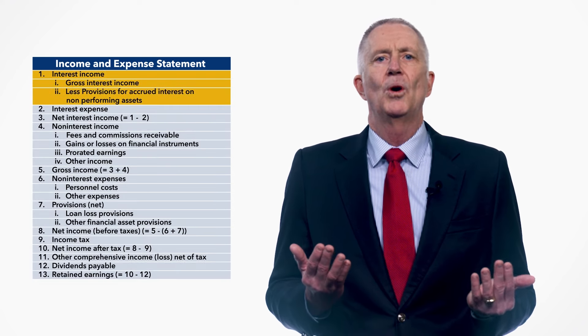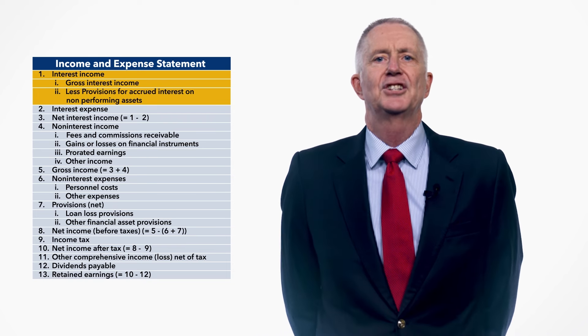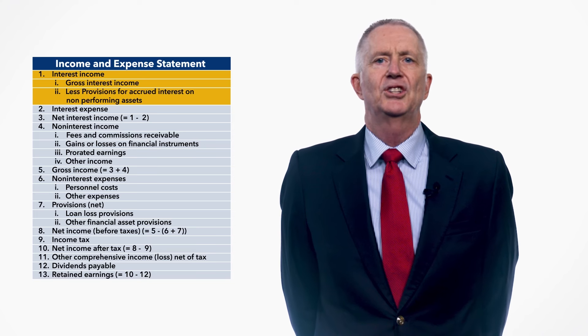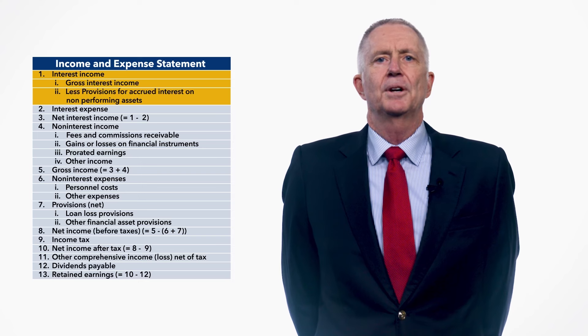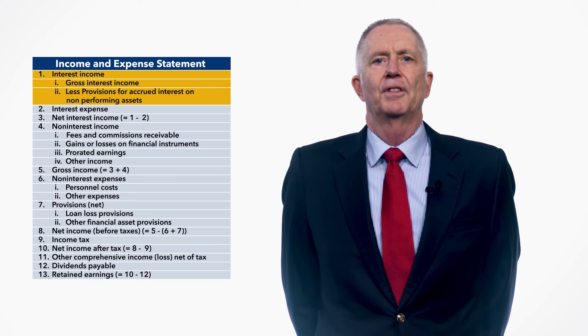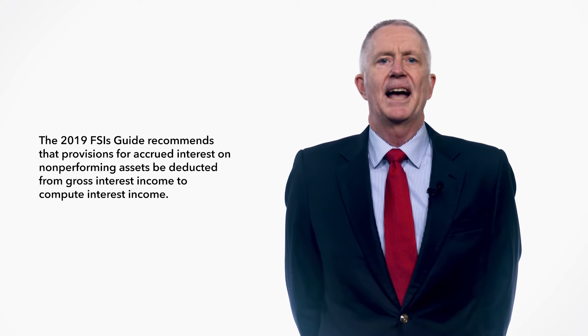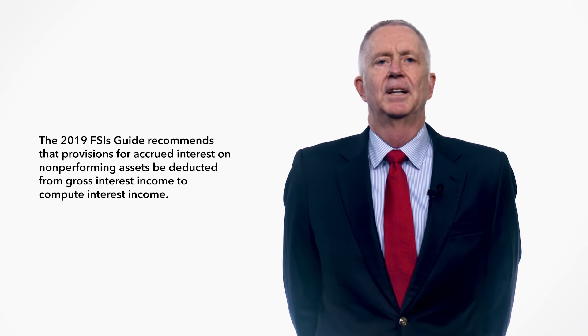Interest income, line 1, includes fees and commissions that are an integral part of the effective yield of a financial instrument. An example would be an origination fee or commission paid by a borrower to obtain a loan — the amount should be recognized over the life of the loan as interest income. The 2019 FSI's guide recommends that provisions for accrued interest on non-performing assets be deducted from gross interest income to compute interest income. Recall that this treatment differs from IFRS 9, and better reflects the interest actually earned during the accounting period.